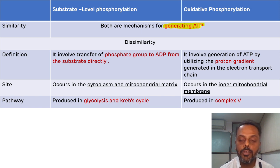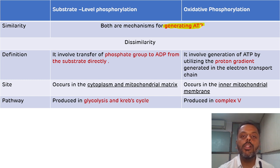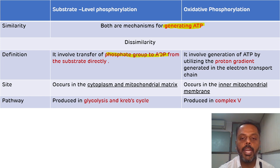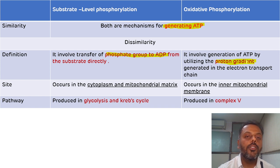Now we will see the various differences between substrate level and oxidative phosphorylation. The first difference is related to the definition. Substrate level phosphorylation involves the transfer of a phosphate group from a substrate to ADP. Oxidative phosphorylation involves the generation of ATP by utilizing the proton gradient which occurs in the electron transport chain.